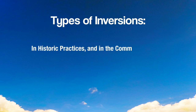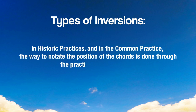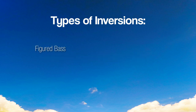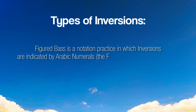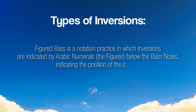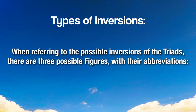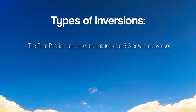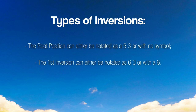In historic and common practice, the way to notate the position of a chord is done through figured bass. Figured bass is a notation practice in which inversions are indicated by Arabic numerals — the figures — below the bass notes, indicating the position of the chords. The root position is notated as 3-5 or with no symbol. The first inversion is notated as 3-6 or with a 6. The second inversion is notated as 4-6.